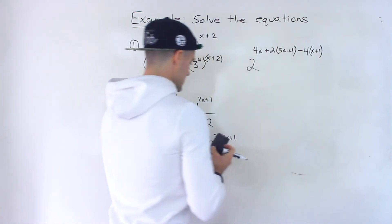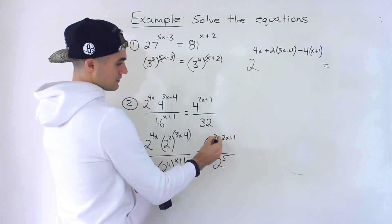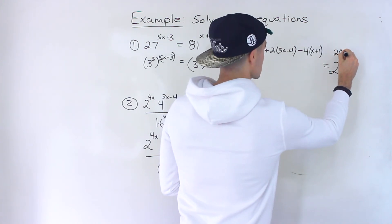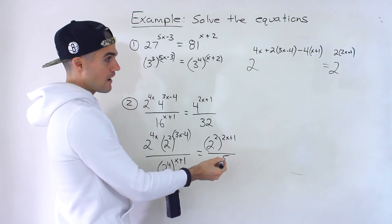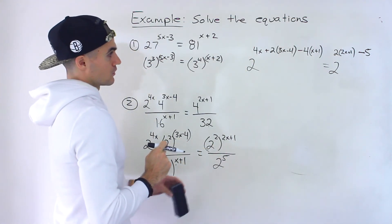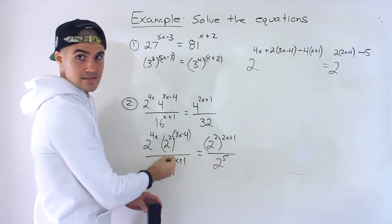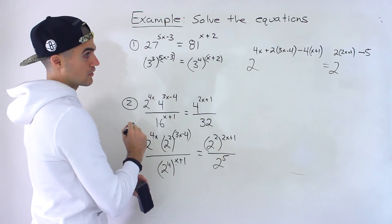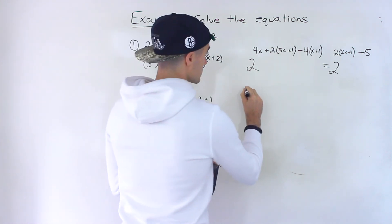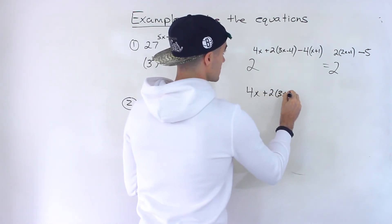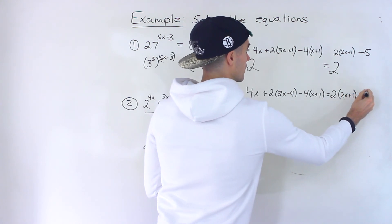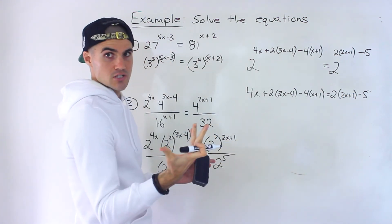Same thing on the right side — we're not multiplying anything there, so we rewrite it as 2 to the power of 2 bracket 2x plus 1, and then we're dividing by 2 to the power of 5, so we subtract 5. Now that we have it in that format, we can drop the base 2s because the exponents have to be the same. So we'd end up with 4x plus 2 bracket 3x minus 4 minus 4 bracket x plus 1 minus 5, and then we just solve for x.